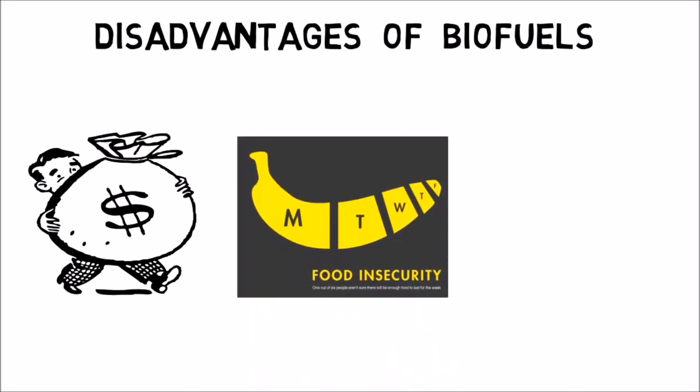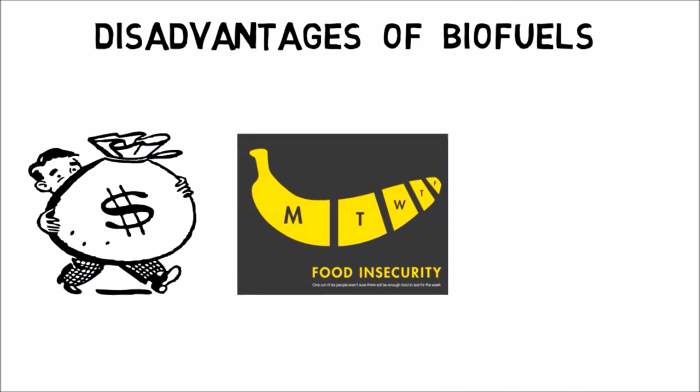Food Insecurity. Land that can be used for growing crop is used for growing biofuel crop. So problem of food security arises from it. As there is already shortage of food in all over the world.